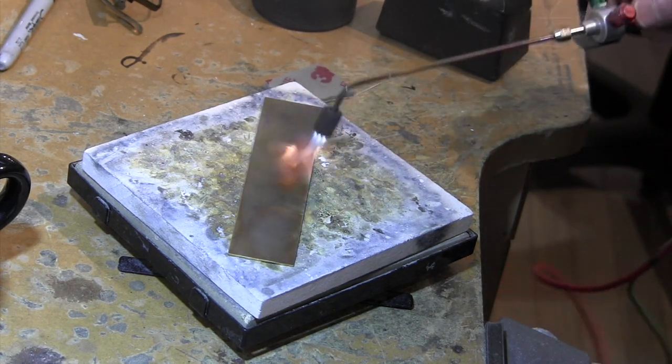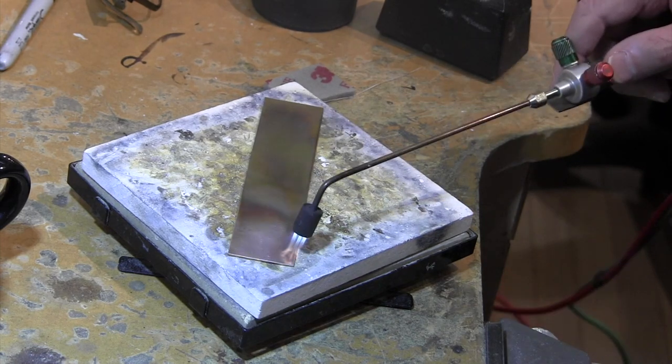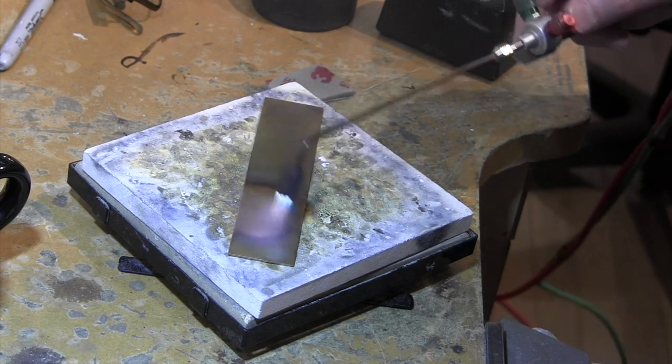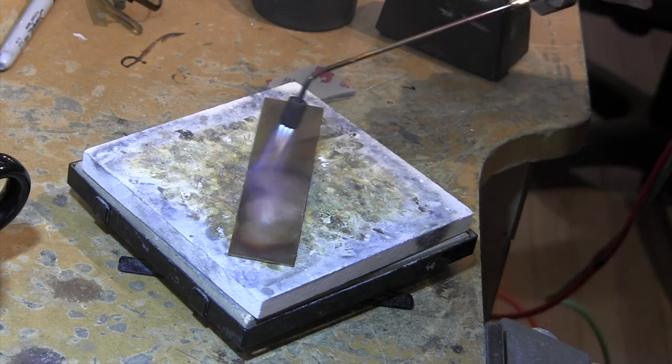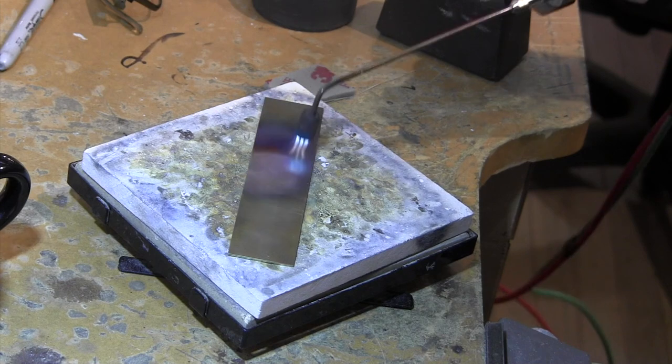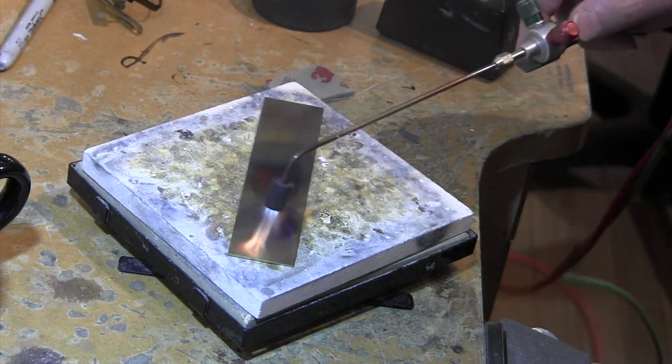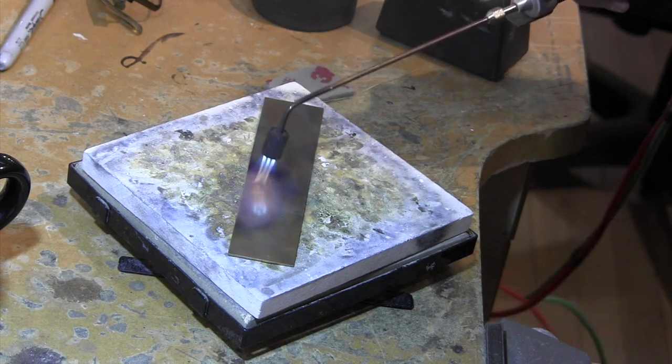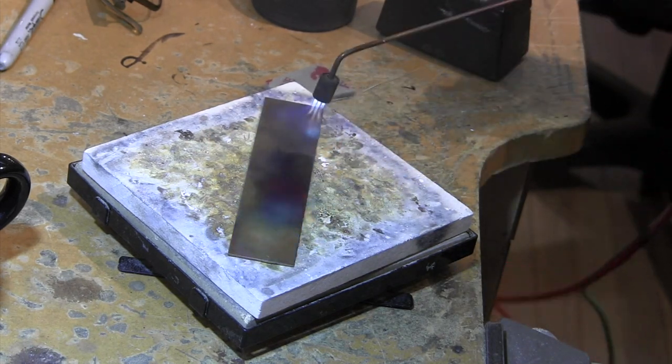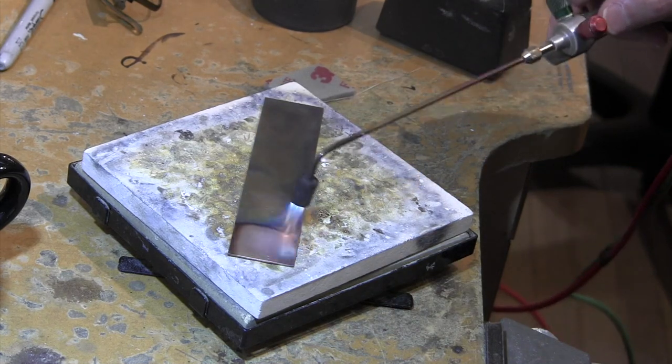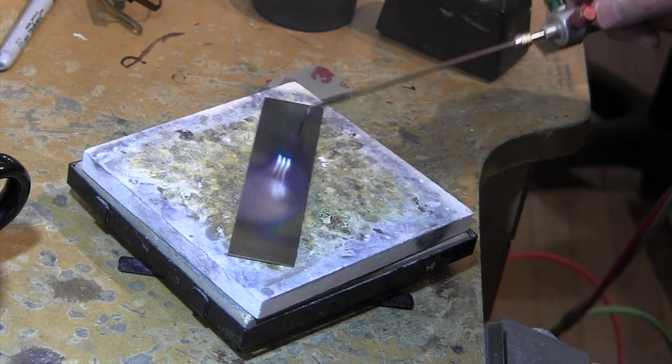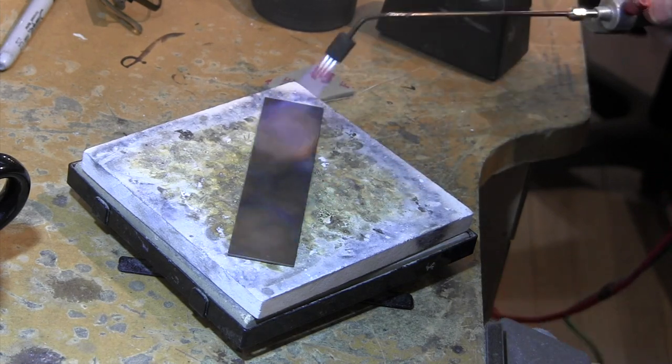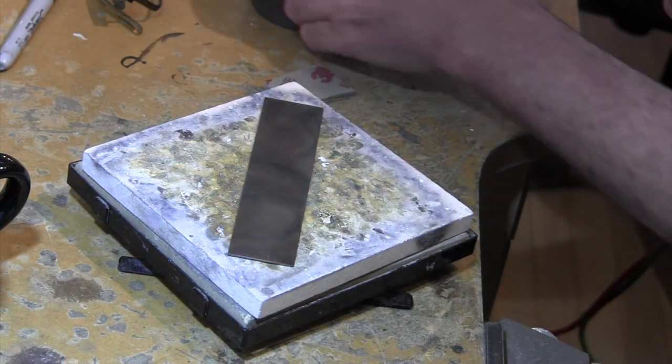The nice thing is we don't have to worry about fire scale here. We're going to take care of that with the burnishing and the pickling and bringing up the fine silver, which does not show oxidation stains from the copper. Okay, so that's been annealed and we'll put that in our pickle.